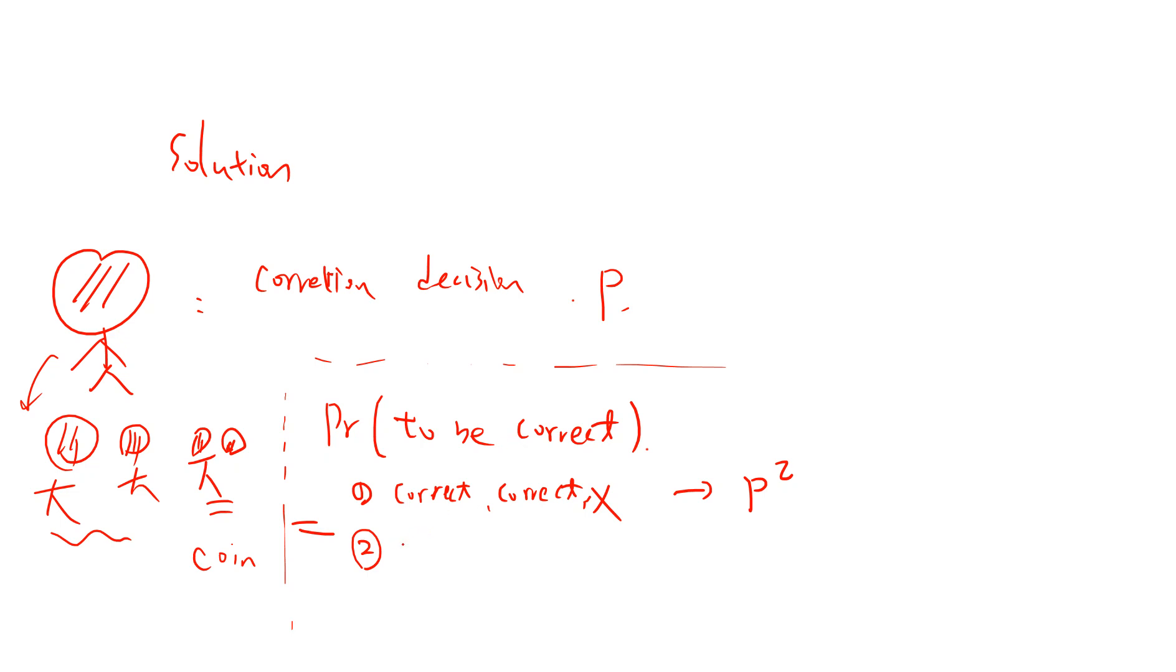The second possible case is they have correct and not correct, and the third man makes the correct decision, so the total result is still correct. The third case is the first man not correct and the middle man correct and the third man is correct. This is all the cases - if you have any others, then the result will be not correct.